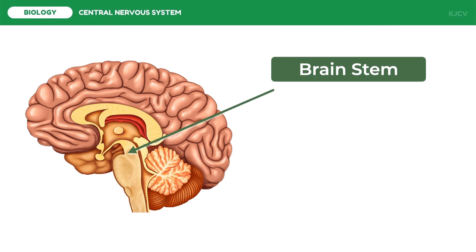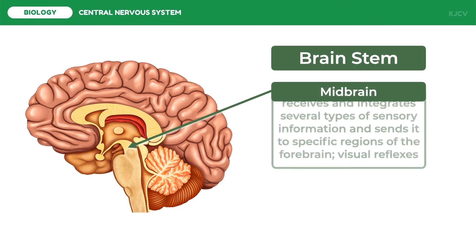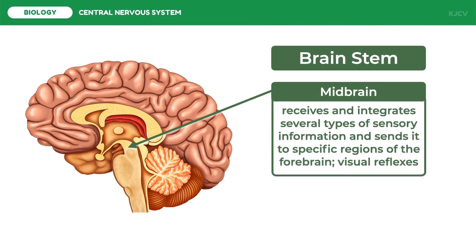The brain stem has three major parts. The midbrain receives and integrates several types of sensory information and sends it to specific regions of the forebrain. All sensory axons involved in hearing either terminate in the midbrain or pass through it on their way to the cerebrum. In addition, the midbrain coordinates visual reflexes such as the peripheral vision reflex, where the head turns toward an approaching object without the brain having formed an image of it. The second part of the brain stem is the pons.